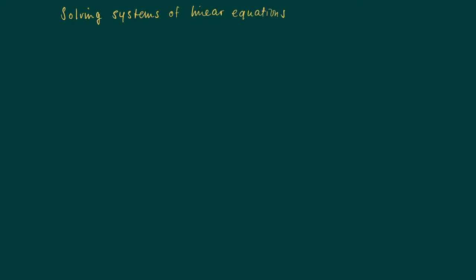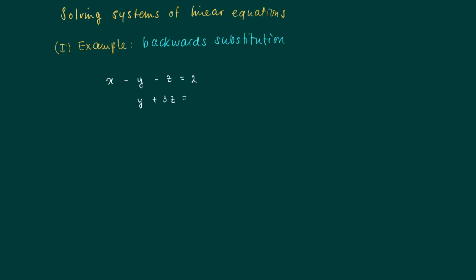We introduced the notion of a system of linear equations and the notion of solutions of the system. The general question is how to find solutions to systems of linear equations. We look at the following example and suggest a way referred to as backward substitution. Consider the following system: the first equation reads x minus y minus z equals 2, the second is y plus 3z equals 5, and the third is 5z equals 10.